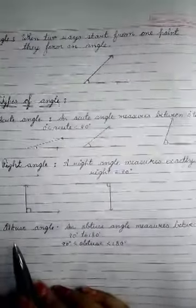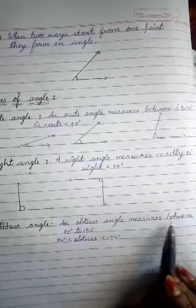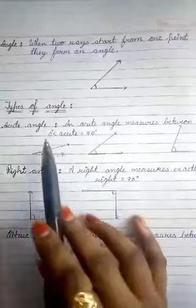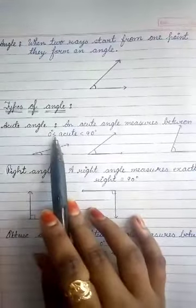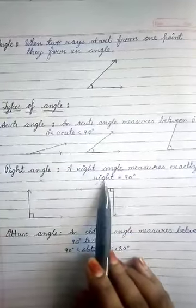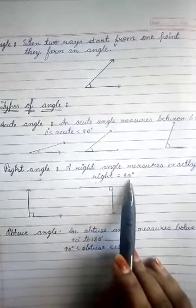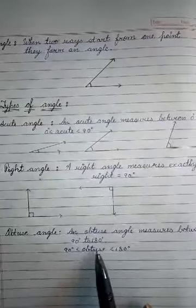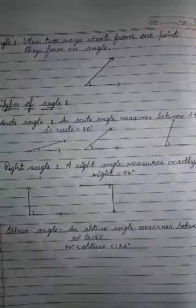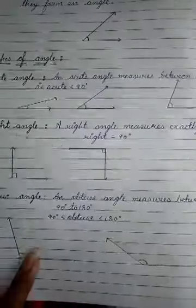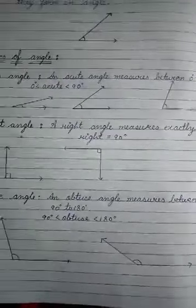The next type of angle is an obtuse angle. An obtuse angle measures between 90 degrees and 180 degrees — it will be greater than 90 degrees but less than 180 degrees. An acute angle is greater than 0 degrees but less than 90 degrees; a right angle is exactly 90 degrees; and an obtuse angle is greater than 90 degrees but less than 180 degrees. Here you can see the figures of obtuse angles.